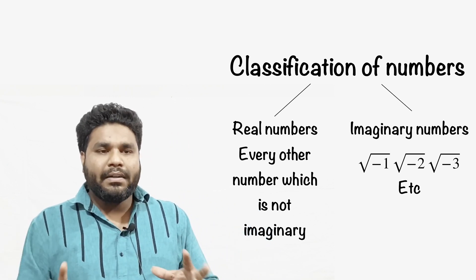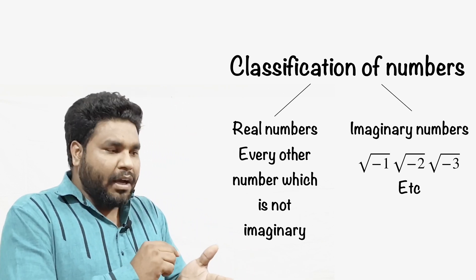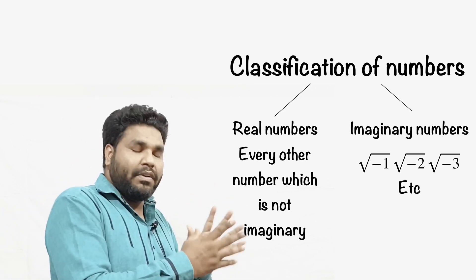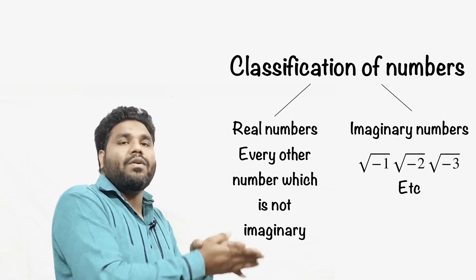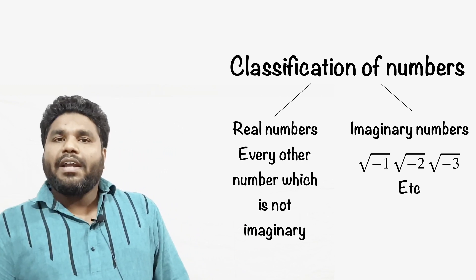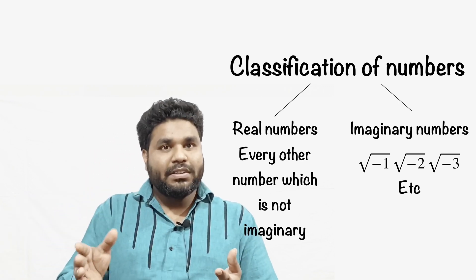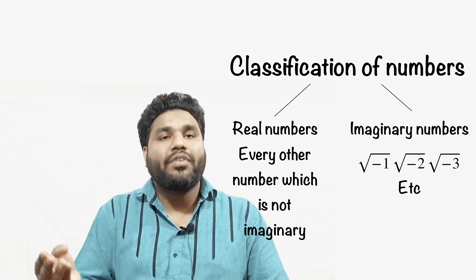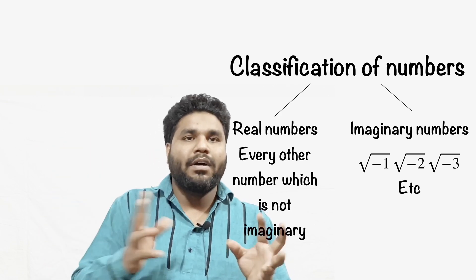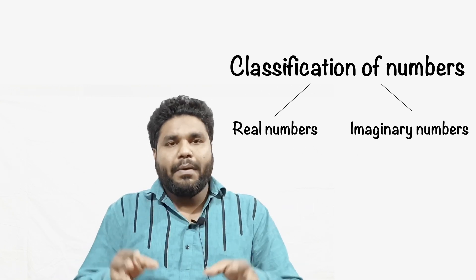In classes 7 and 8, we don't know whether a number like √3 can be represented on a number line or not. So let us understand real numbers through imaginary numbers: any number which is not imaginary is real — for example, √3, a fraction like 12/5 or 1/2, negative numbers, zero, terminating and non-terminating numbers — any kind of number is a real number.